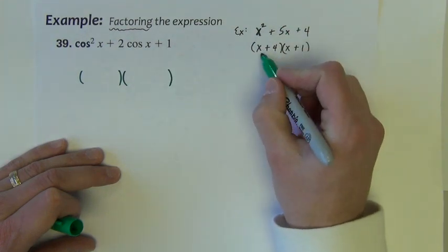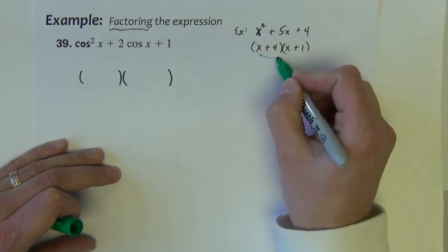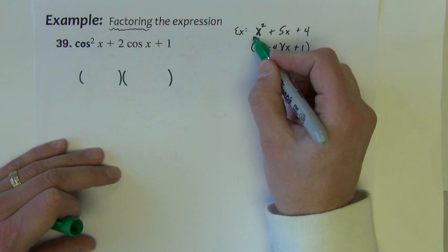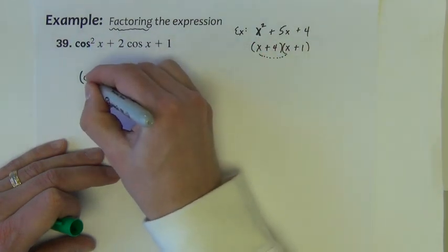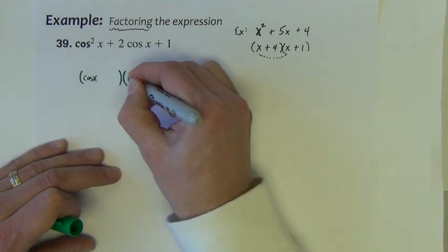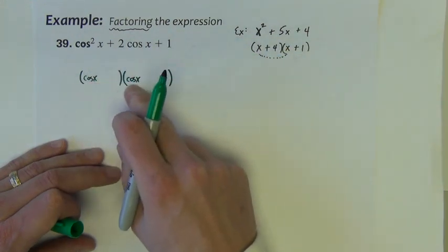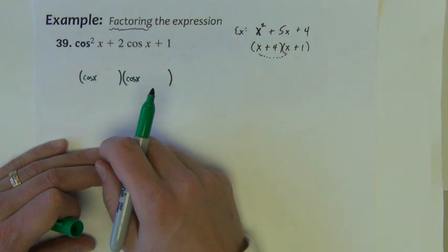So how did we do it over here? It was the first step of our foil. x times x gives x squared. Well, what times what gives cosine squared? And the answer would be cosine. Cosine times cosine would give cosine squared.